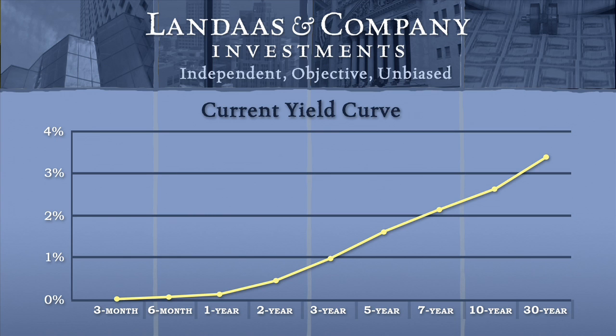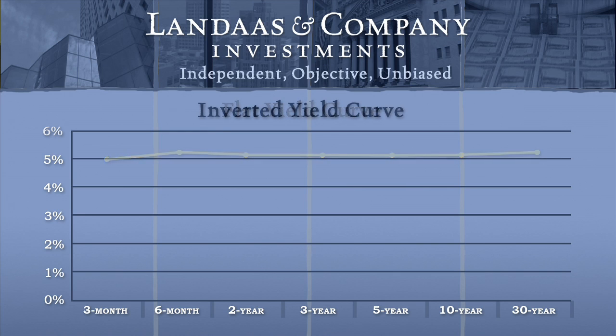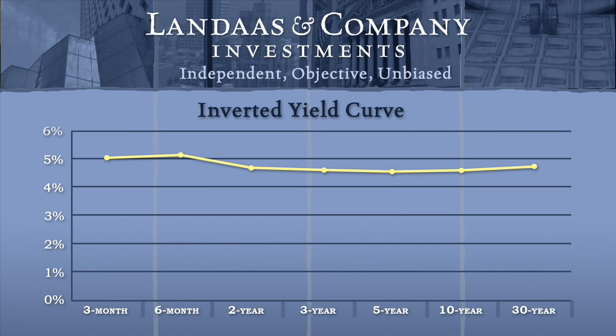Typically the yield curve slopes up for the longer maturities, but it's not always the case. There are a couple of market environments that can really cause the yield curve to flatten out, and even sometimes eventually invert, where longer-term rates are actually below the shorter-term rates. It's very abnormal, and when it does occur, it almost always signifies a recession.